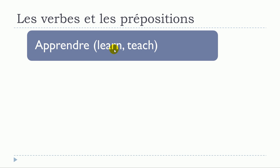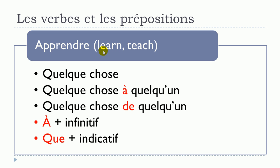Now apprendre. I've put two meanings, so I'll explain which meaning connects to which structure. First structure: apprendre quelque chose — no preposition — connected to the meaning 'to learn'. Second structure: no preposition — apprendre quelque chose à quelqu'un — and in that case this structure is connected to the meaning 'to teach'. Third structure: apprendre quelque chose de quelqu'un — connected to the 'learn' meaning.